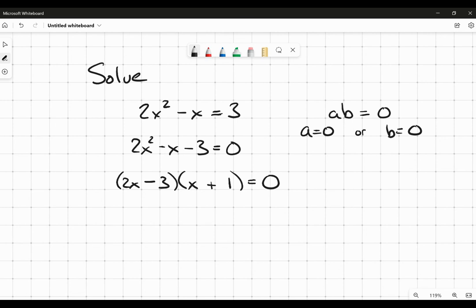I've got my quadratic factored, and now I know that either 2x minus 3 is equal to 0, or this factor here, x plus 1, is equal to 0. They can't simultaneously be equal to 0, but what I'm looking for here are the different values of x that make the whole expression equal to 0.